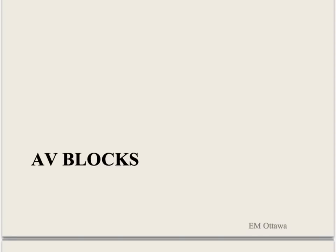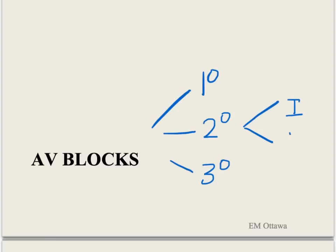The next rhythm would be about AV blocks. These happen because there is a blockage of the impulses somewhere in the AV node. There are three types of AV blocks: first, second, and third degree. Second degree AV blocks are also further divided into type 1 and type 2.